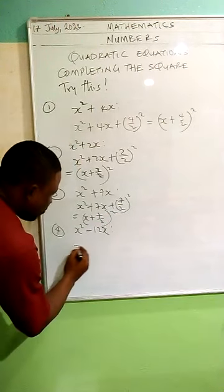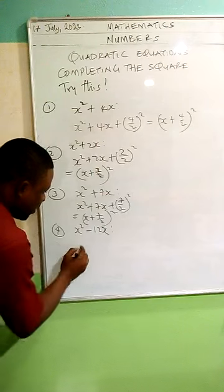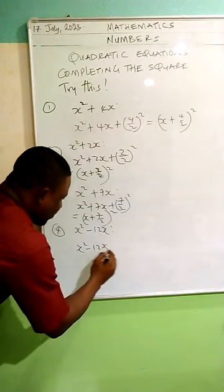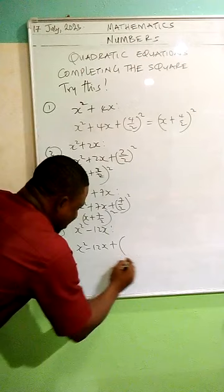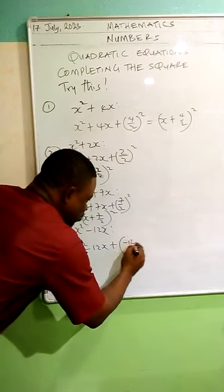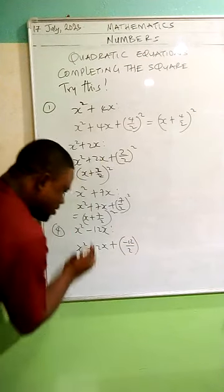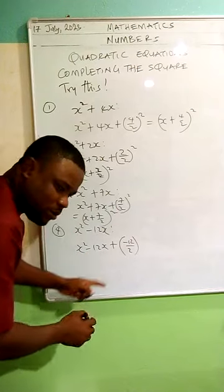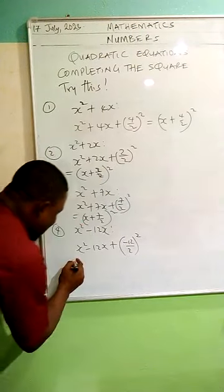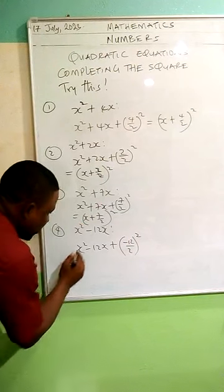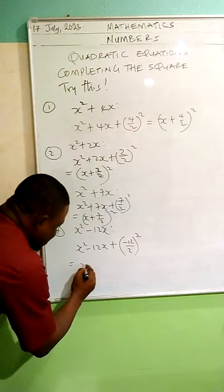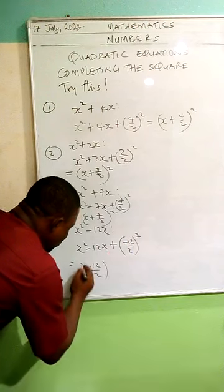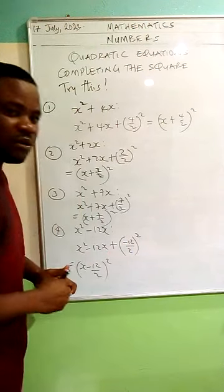And for x squared minus 12x: I'm adding minus 12 over 2, all squared. That's minus 12 divided by 2, so I end up getting x plus minus 12 over 2, all squared. Is that right?